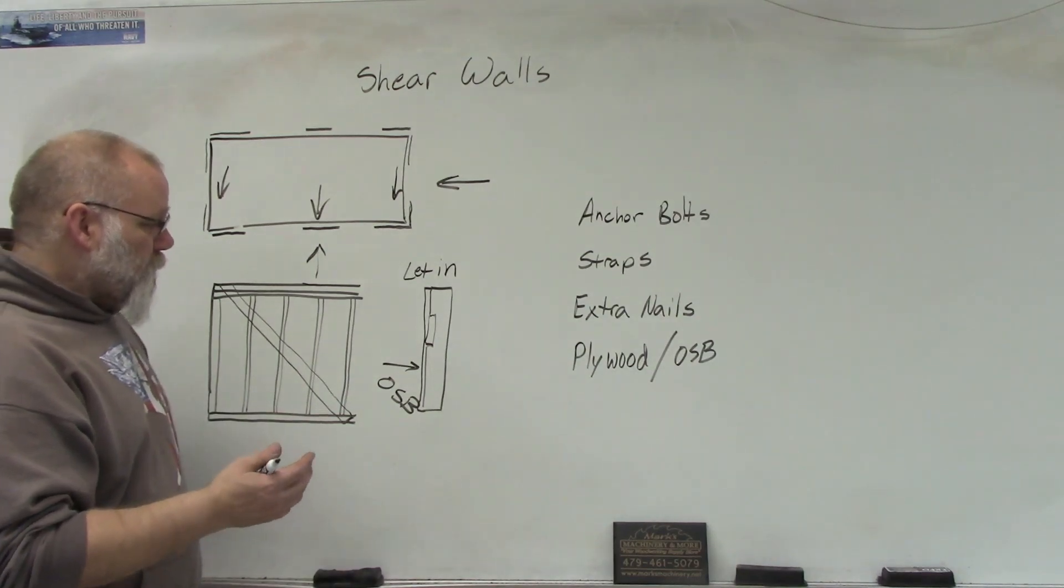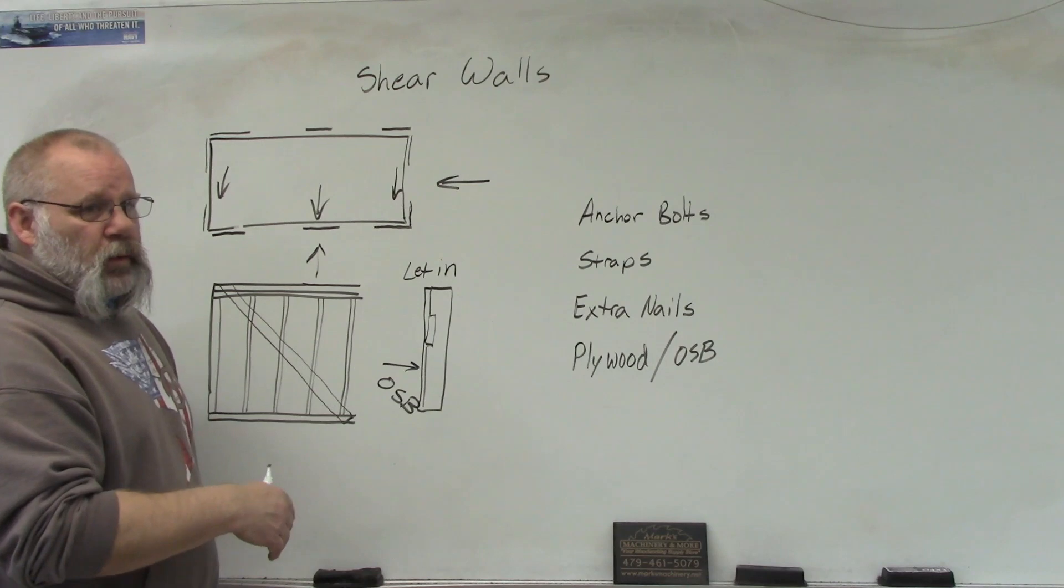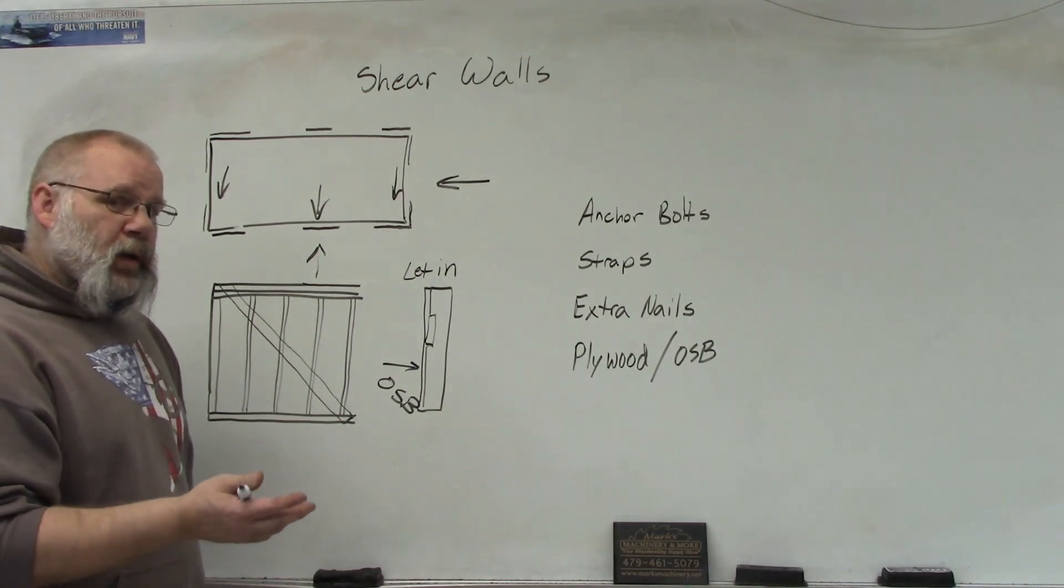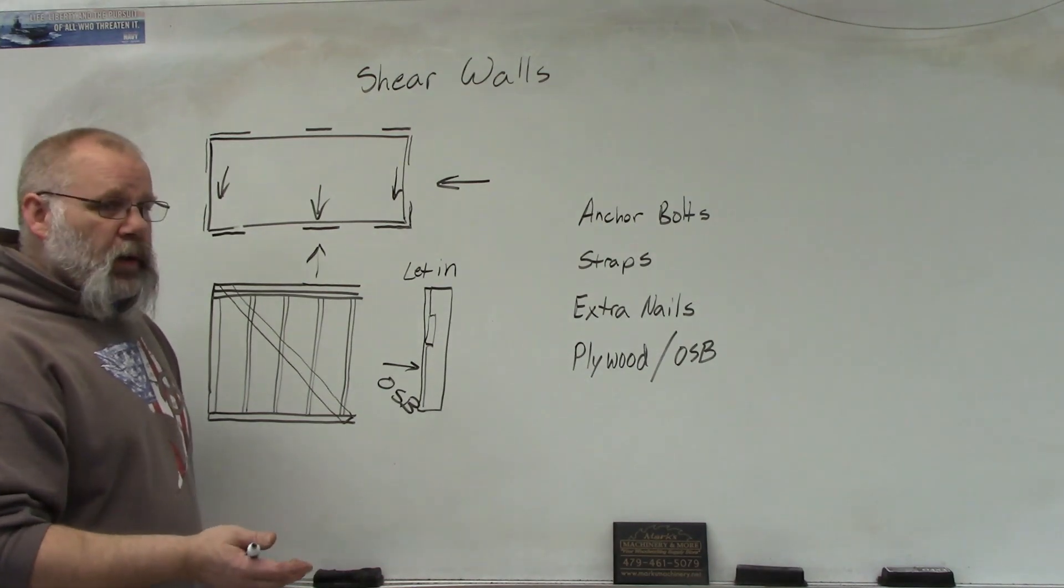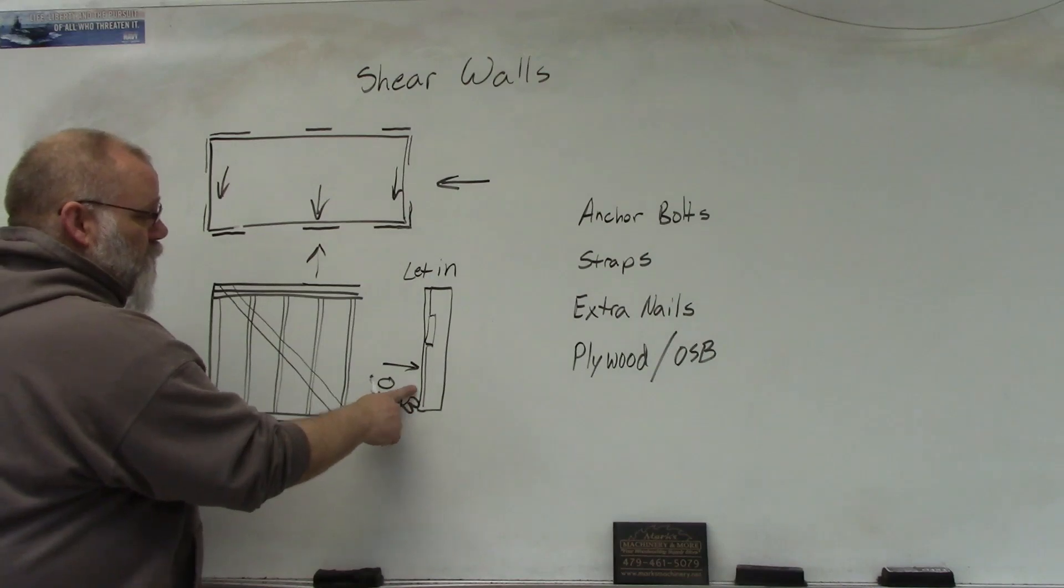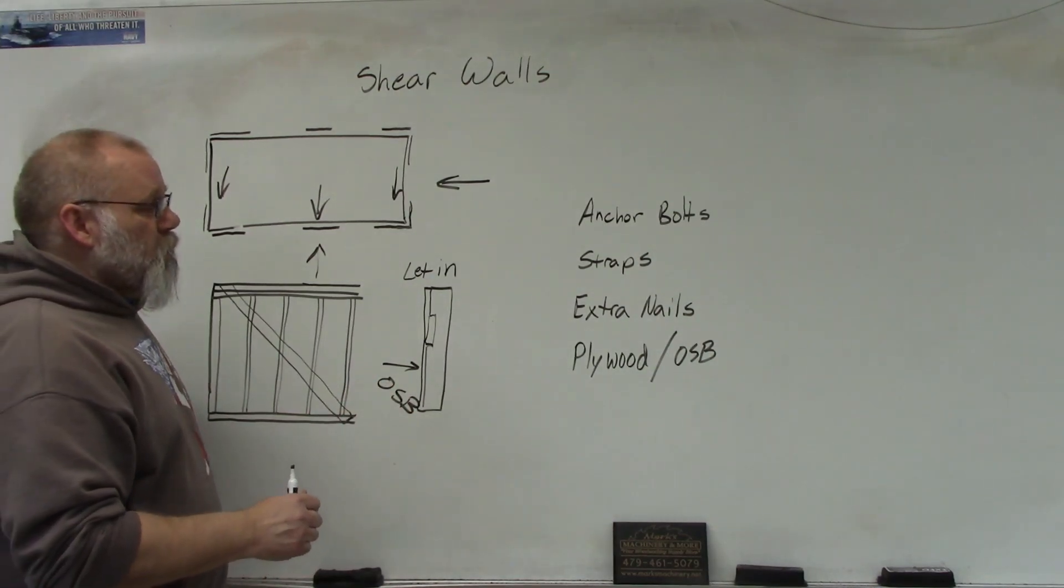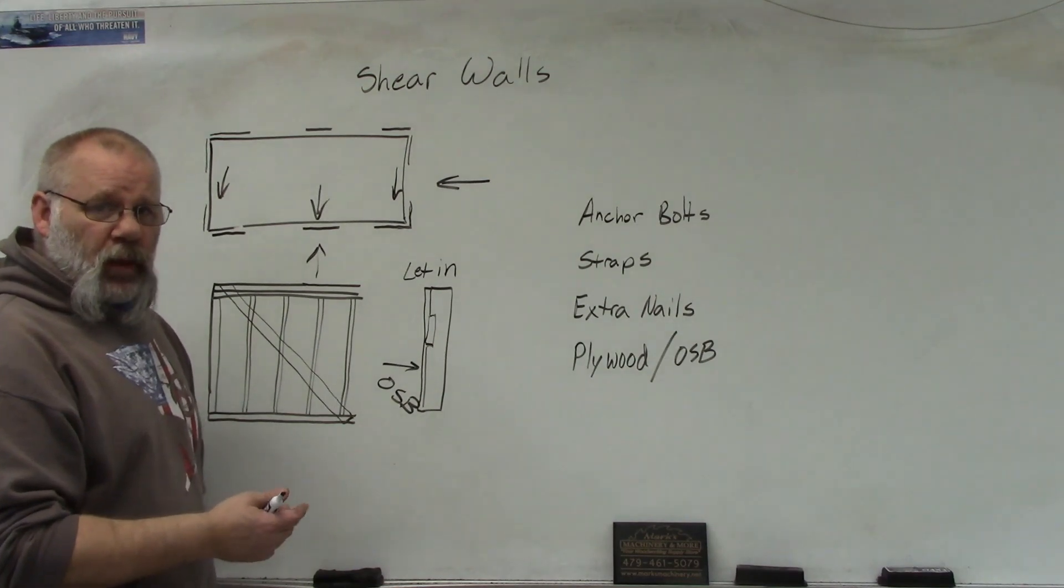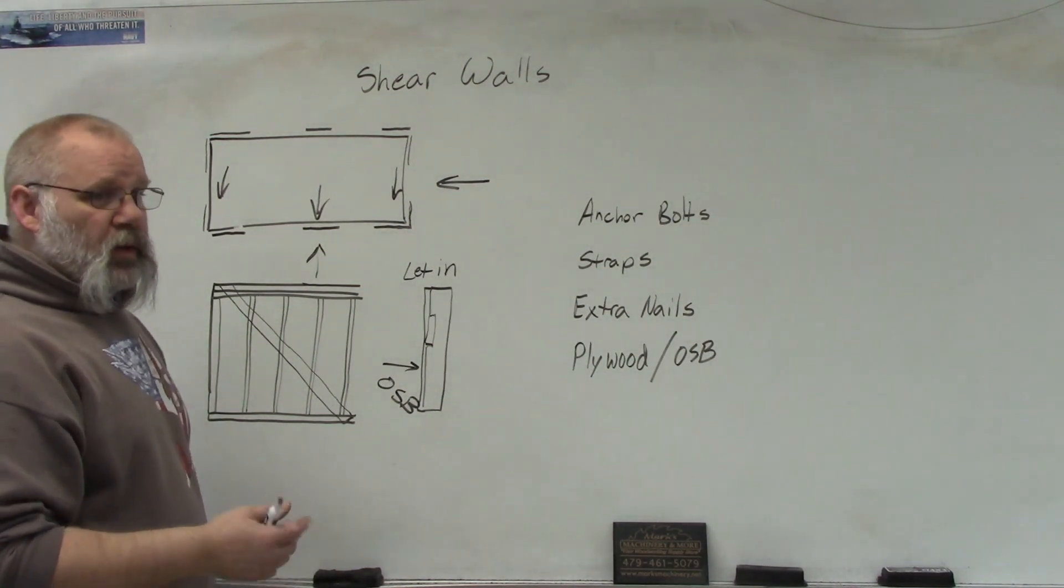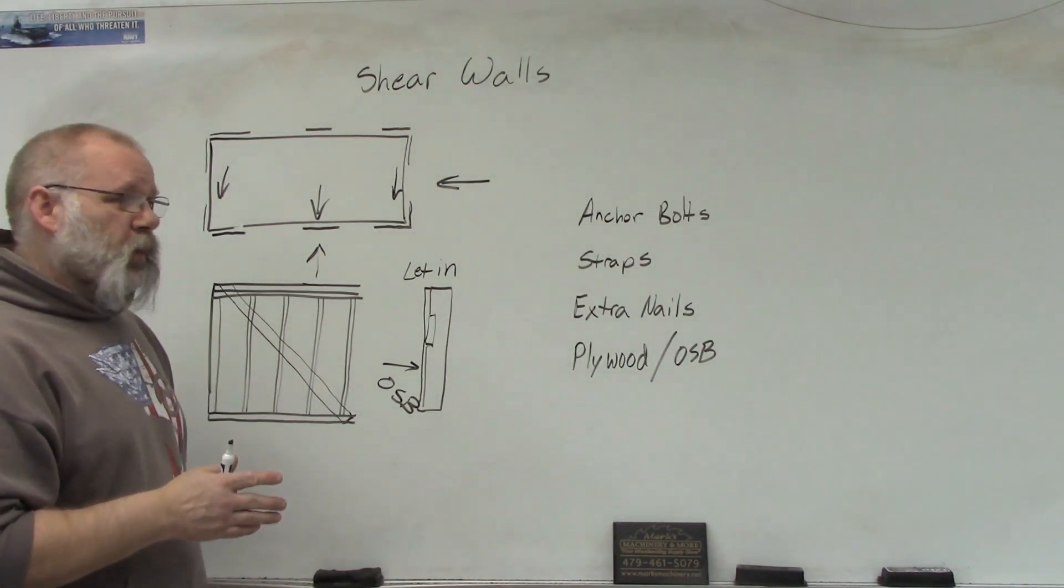And then it got to the point where codes were saying, well, we need to reinforce the houses more, especially if it's in a high wind area or an earthquake area. So after that, they went from just OSB on the corners or plywood, they would sheet the whole house in OSB or plywood. So pretty much all of the walls in the house could be kind of like a shear wall because they would be sheeted with the plywood.